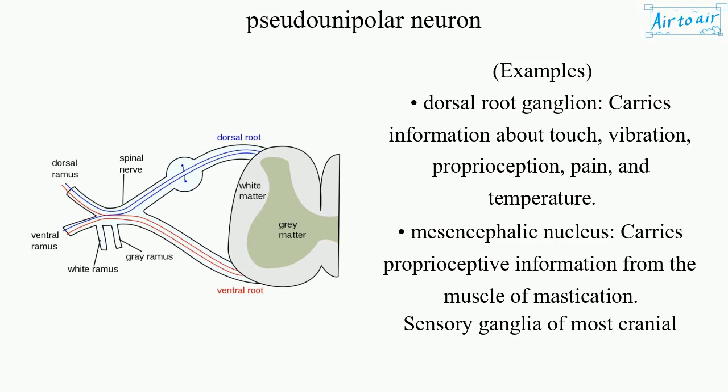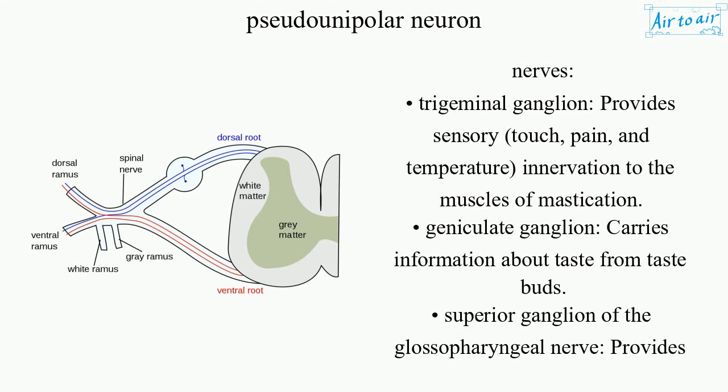Sensory ganglia of most cranial nerves. Trigeminal ganglion — provides sensory touch, pain, and temperature innervation to the muscles of mastication.